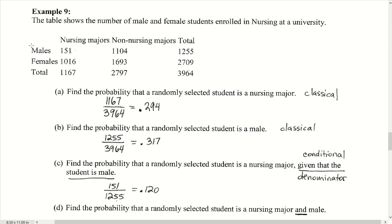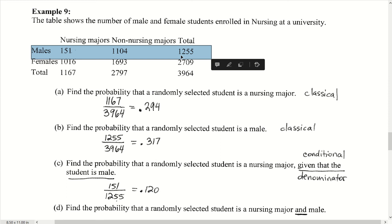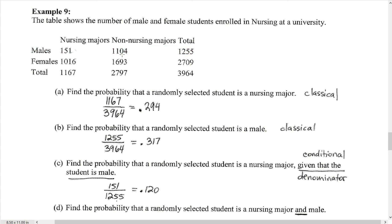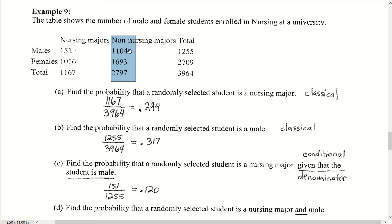If we look at this row, it gives us the number of males. There are 1,255 males altogether: 151 of them are nursing majors and 1,104 are non-nursing majors. Looking at the non-nursing majors column, there's a total of 2,797 non-nursing majors — 1,104 males and 1,693 females. The total number of individuals in the survey is 3,964.